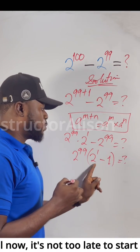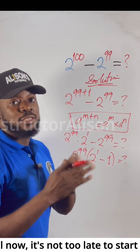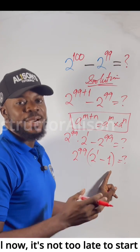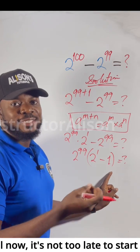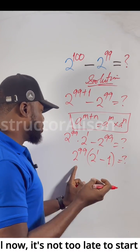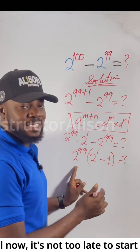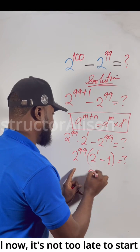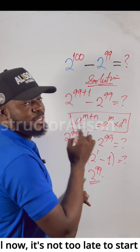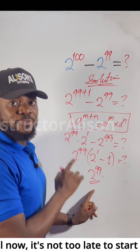So at this point, 2 to the power of 1 is the same thing as 2. And then 2 minus 1, that will be 1. So 1 times 2 to the power of 99 is the same thing as 2 to the power of 99. And this is the solution to this particular problem.